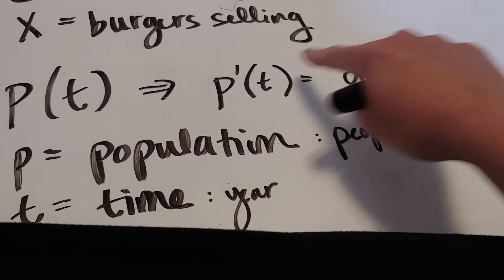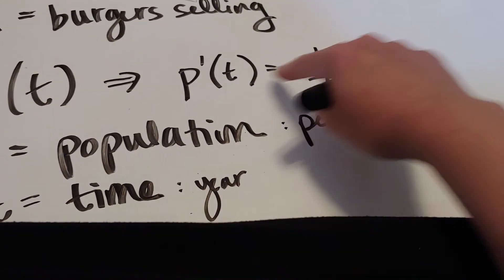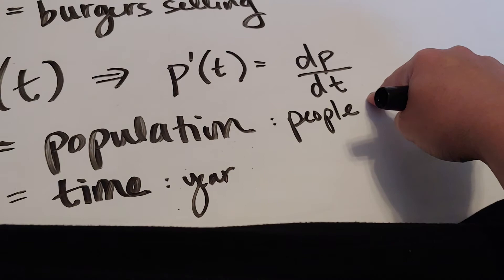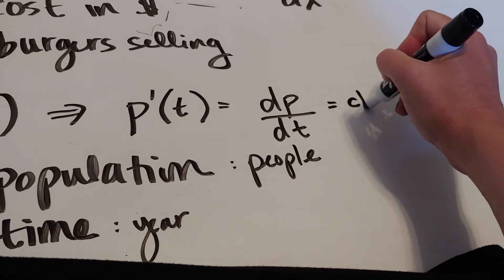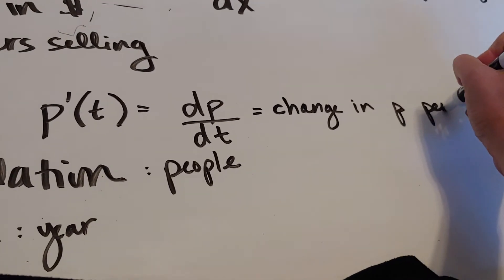Now, the top is always the y. The bottom is always the x. And in this case, x is t. So this would be change in p per t.